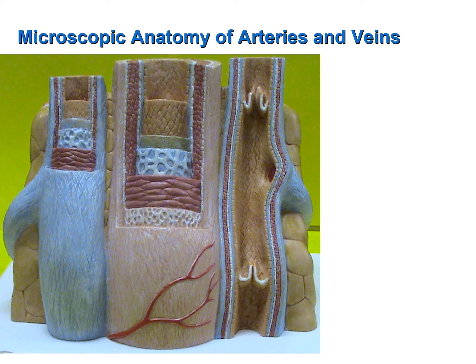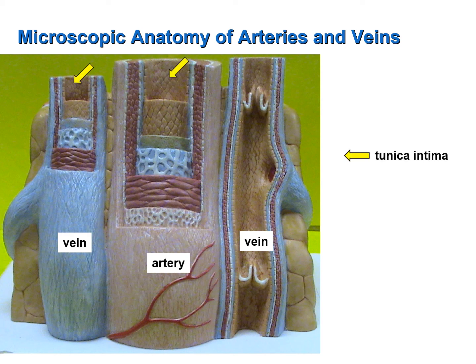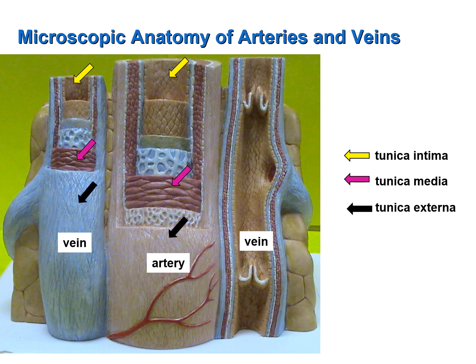After examining the components of the walls of blood vessels on an image, let's move to the model. Here we have an artery in the center flanked by veins on either side, and the walls have been dissected so you can see the various tunics. The innermost tunic, the tunica intima, is identified with the yellow arrow. The middle tunic, tunica media, is identified by the magenta arrow — notice the smooth muscles are significantly thicker in the artery compared to the vein. The last tunic, the tunica externa, is shown by the black arrows. Also notice the valves of the vein.